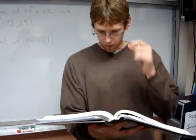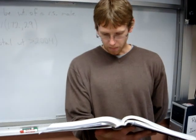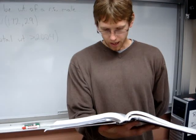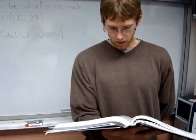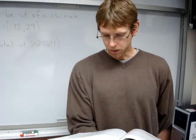It says a ski gondola in Vail, Colorado carries skiers to the top of a mountain. It bears a plaque stating that the maximum capacity is 12 people or 2,004 pounds. That capacity will be exceeded if 12 people have weights with a mean greater than 2,004 divided by 12, which is 167.